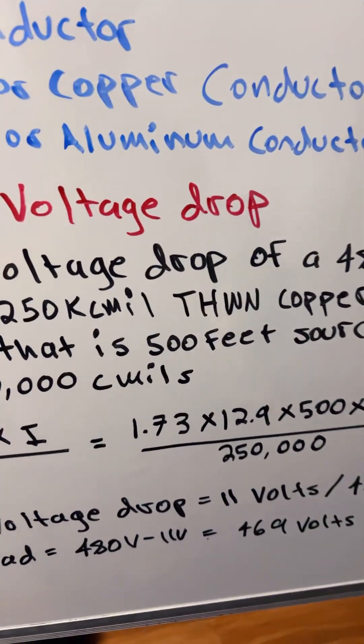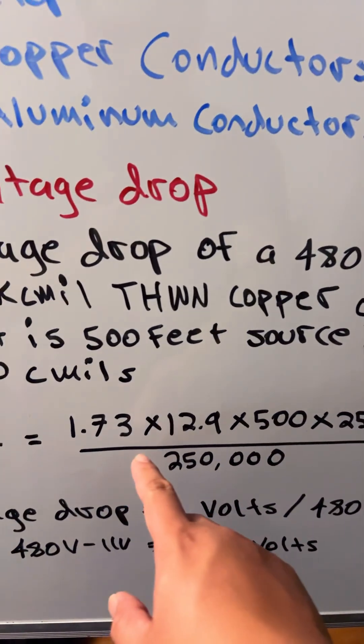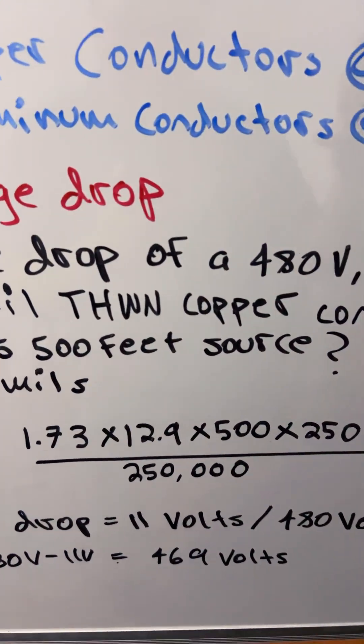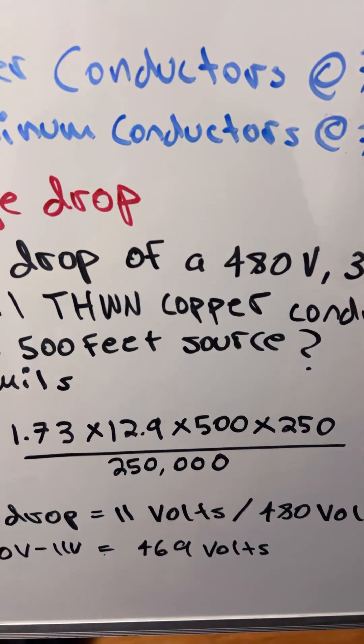So we plug in the numbers: 1.73 square root of 3 times 12.9 because it's copper, times 500 feet, times 250 amps, divided by 250,000 circular mills.